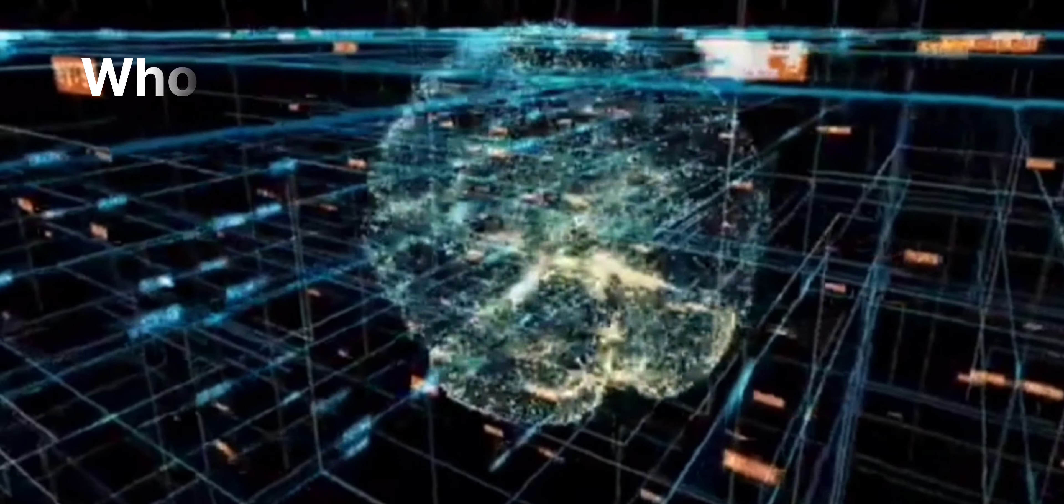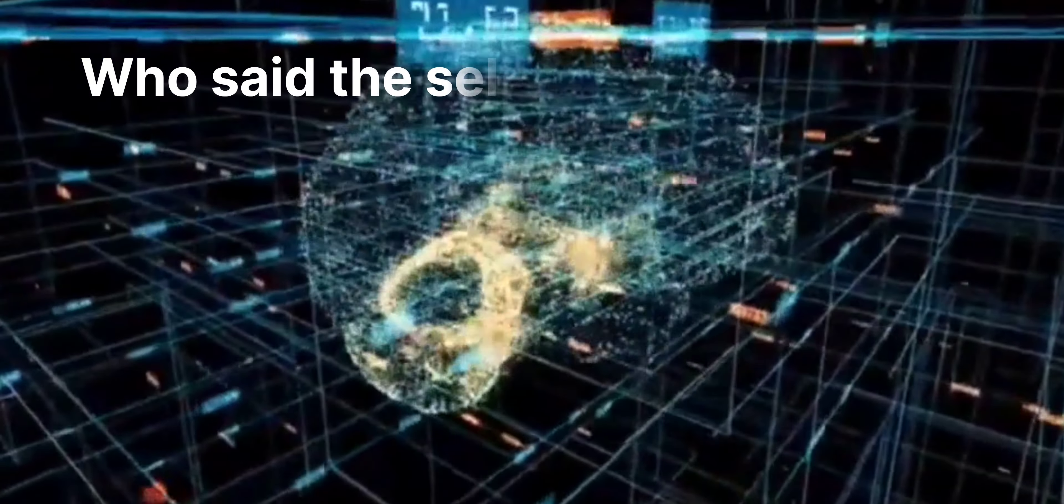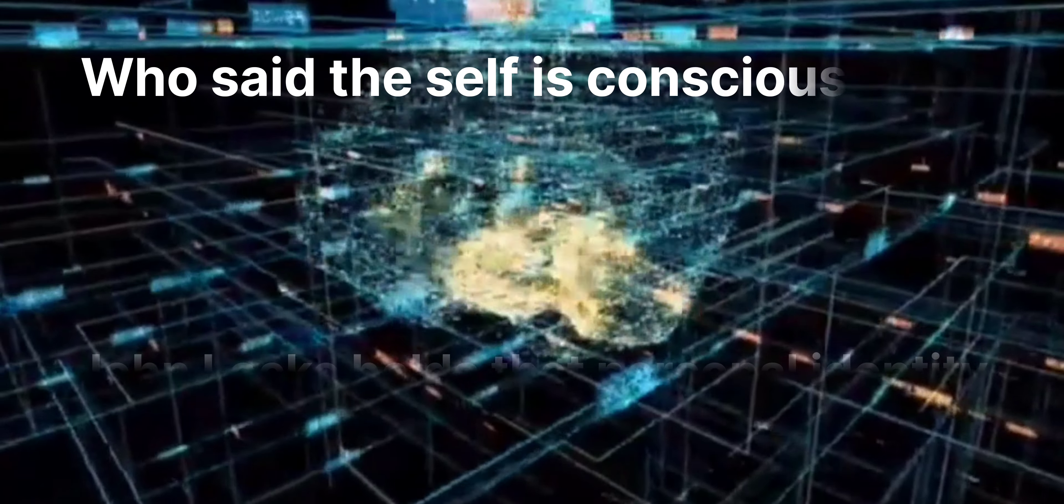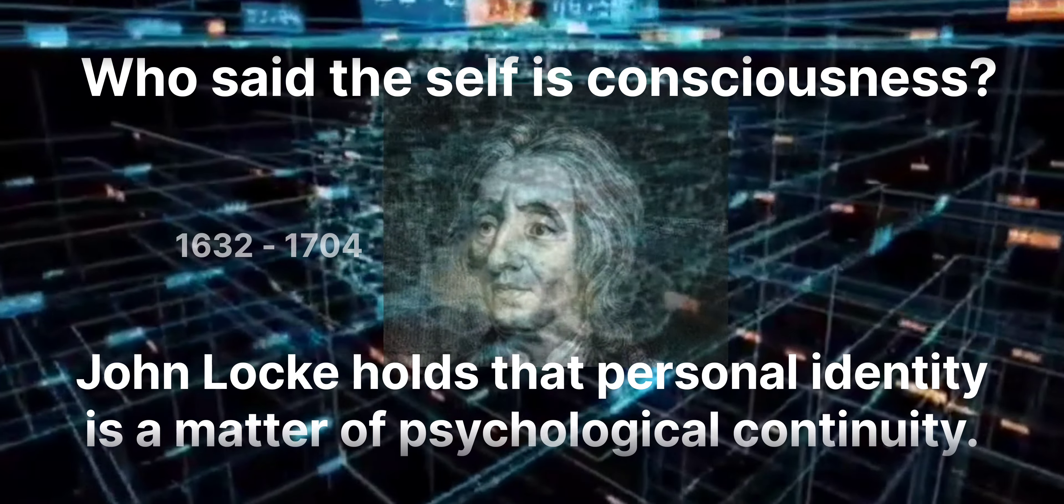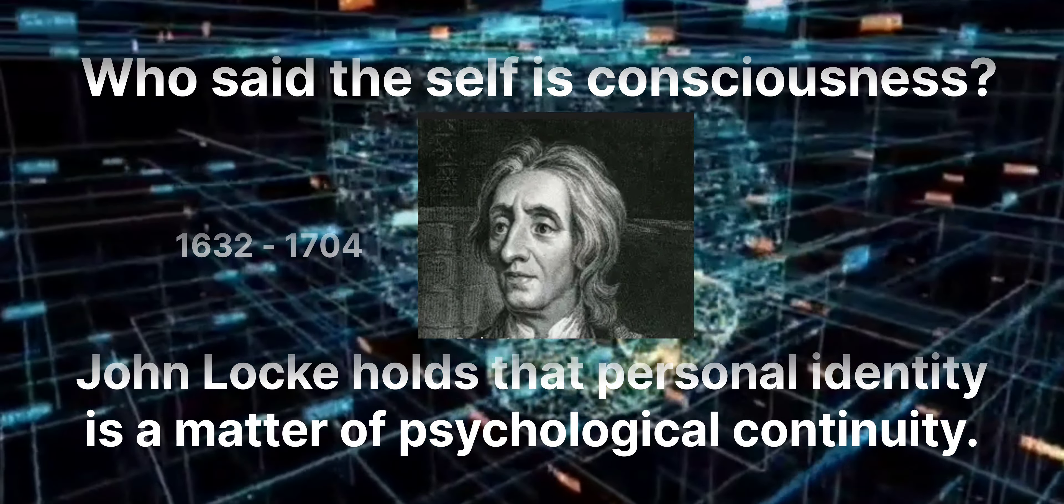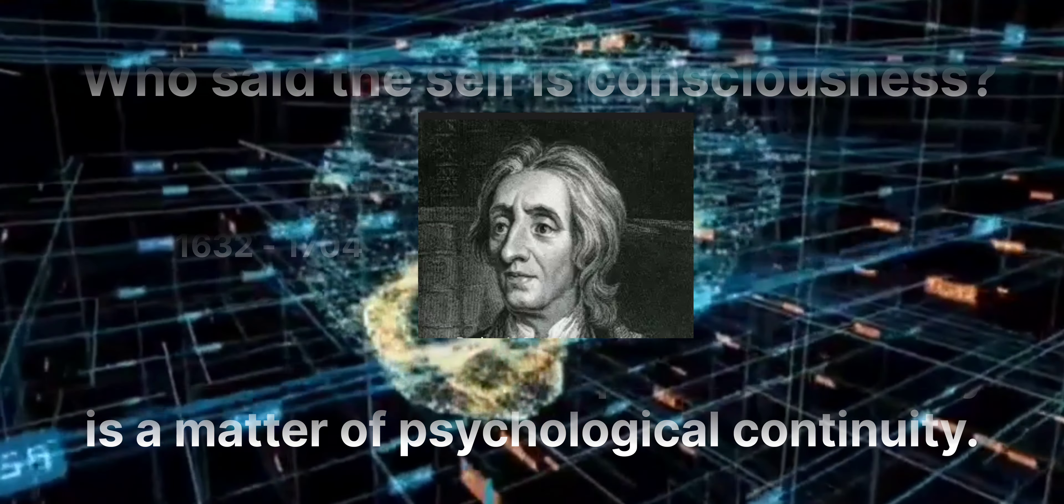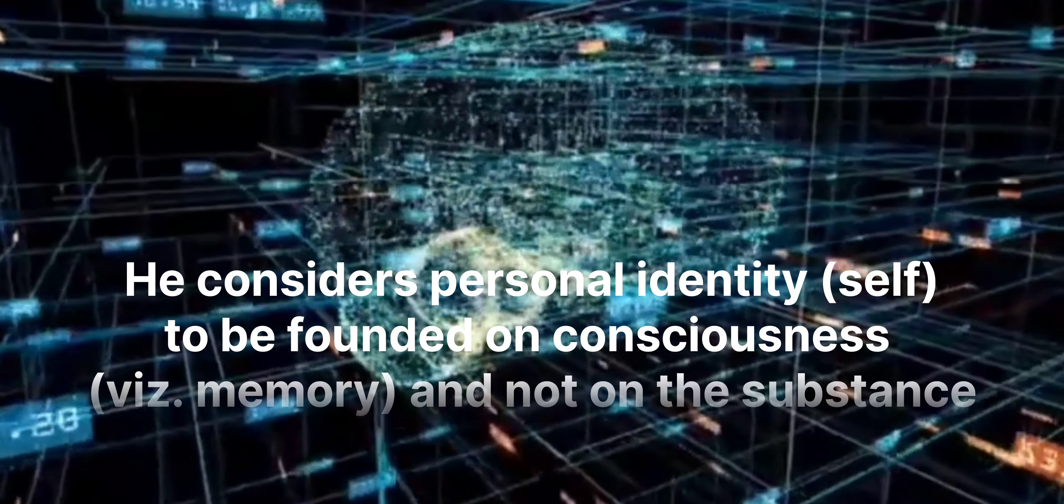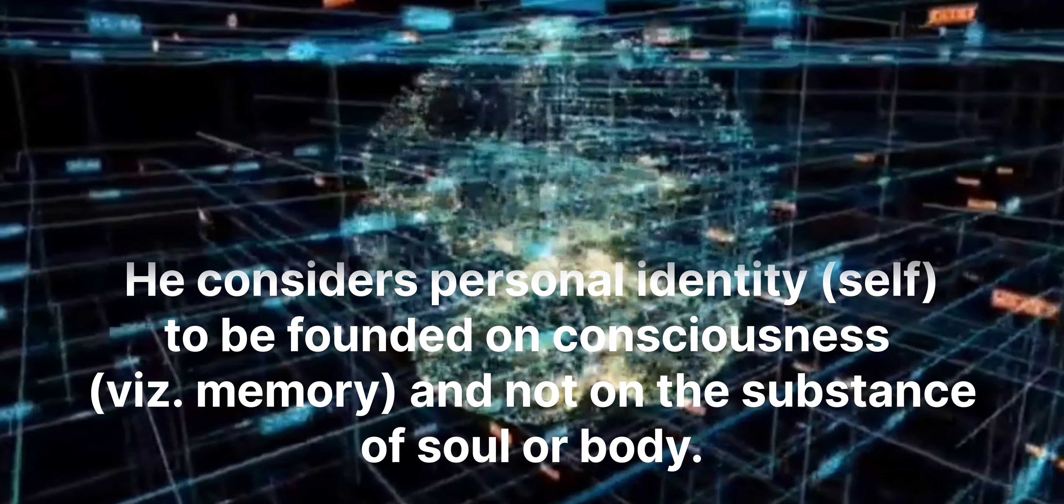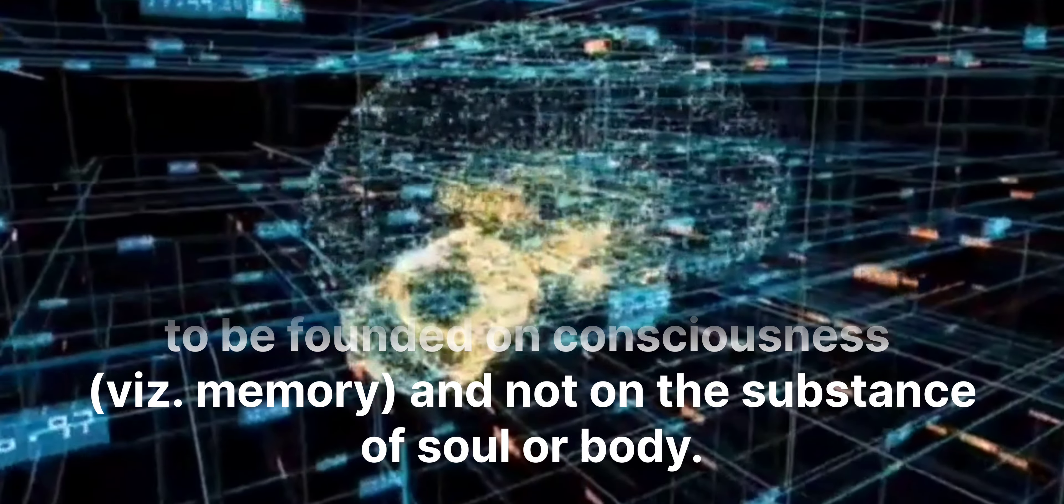Who said the self is consciousness? John Locke holds that personal identity is a matter of psychological continuity. He considers personal identity, self to be founded on consciousness with memory and not on the substance of soul or body.